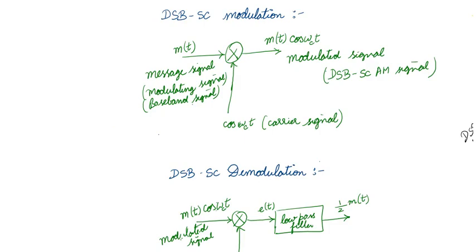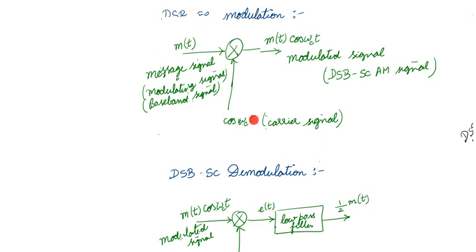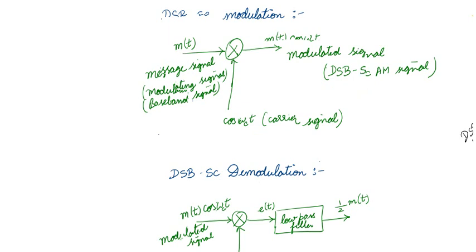First we will see how to produce the Double Sideband Suppressed Carrier modulated signal. It's very simple — if you multiply the message signal m(t) with the carrier signal cos(ωc·t), the output is called the DSB-SC signal. Remember, the message signal can be called by different names like modulating signal or baseband signal, and the output signal is called the modulated signal.